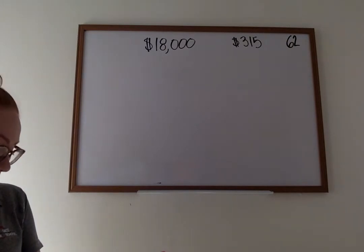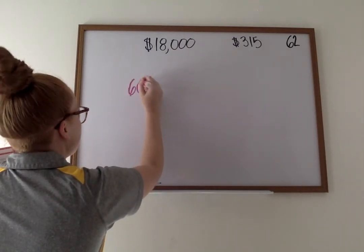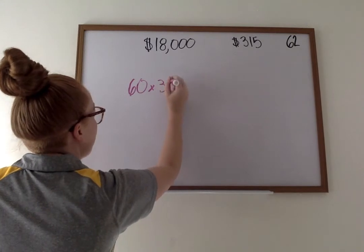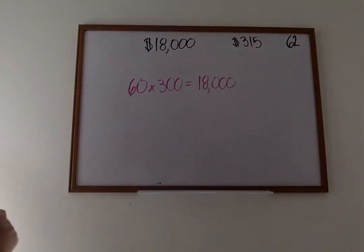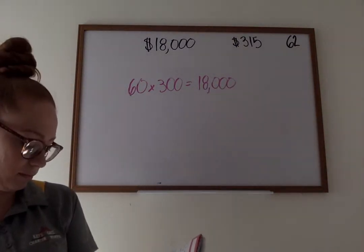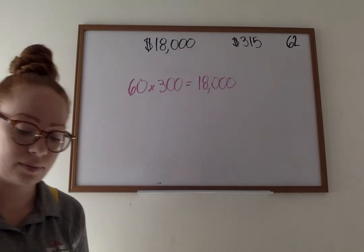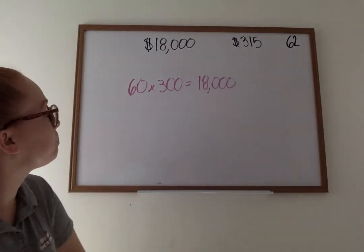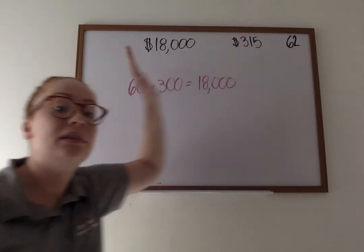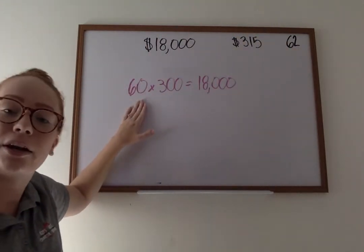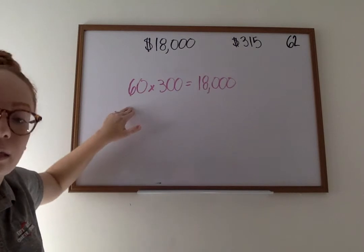He says, this is what Mr. Eddy says, since 60 times 300 equals $18,000, I can stay within my budget. That's what Mr. Eddy says. Now the question's asking, do you agree? Explain. So let's check out this problem. So it looks like Mr. Eddy right here did some estimation. He took his 62. He rounded down to 60. Is that an overestimate or an underestimate? He went from 62 and he went down to 60. That's an underestimate.